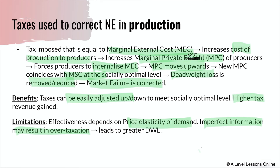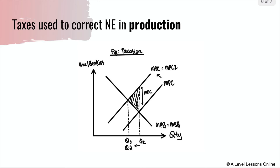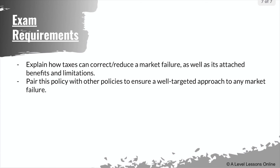Here is the diagram for production under negative externalities — it's exactly the same as the consumption one. Note that MPC shifts outwards when there's a rise in cost of production, and hence MEC is internalized, with quantity reducing to the socially optimal level. Exam requirements are straightforward: you just need to be able to explain how taxes can correct market failure, as well as their benefits and limitations, and pair this with other policies if required.